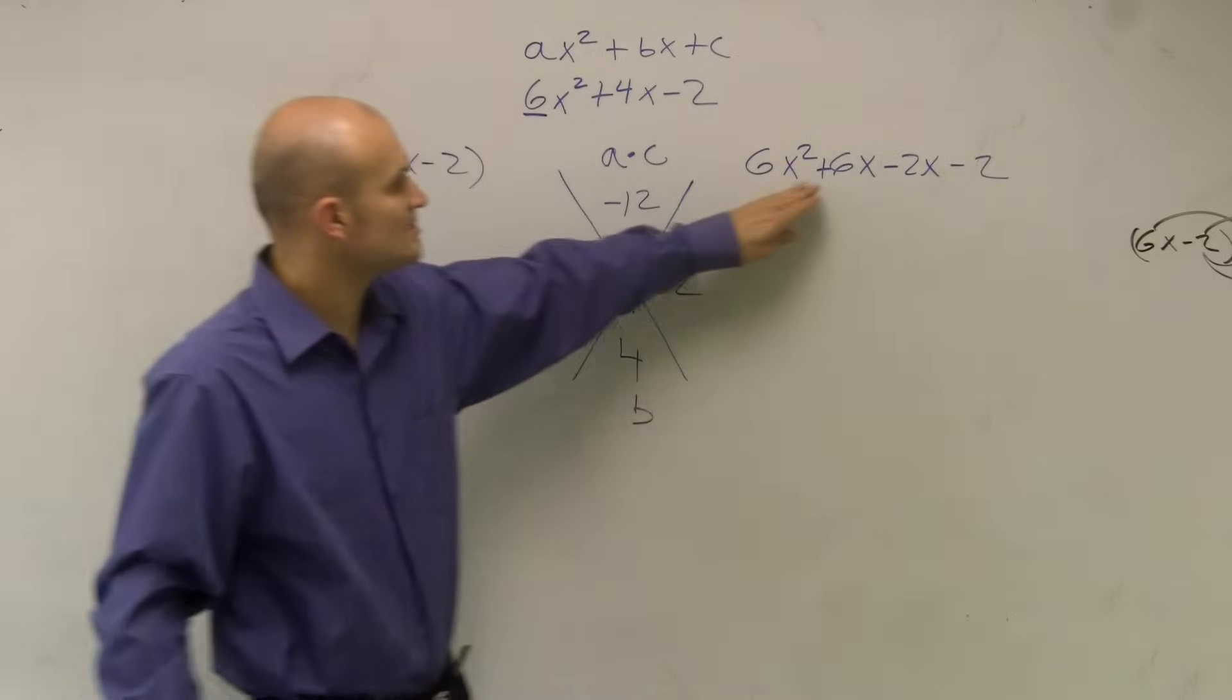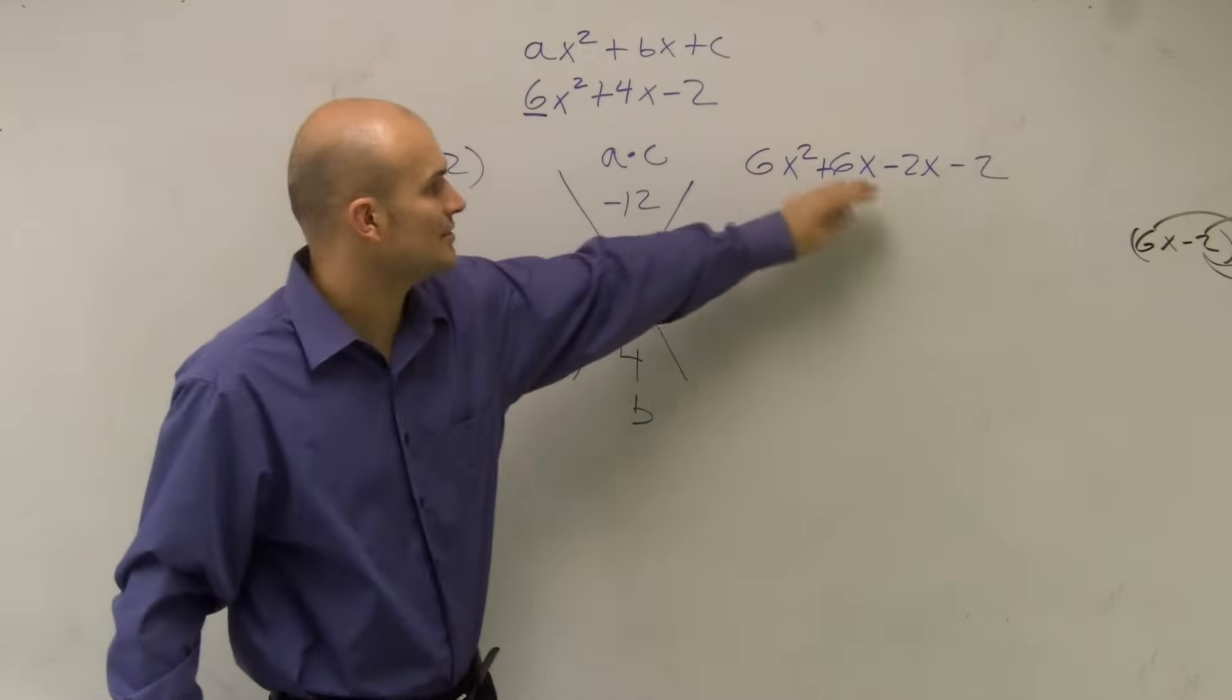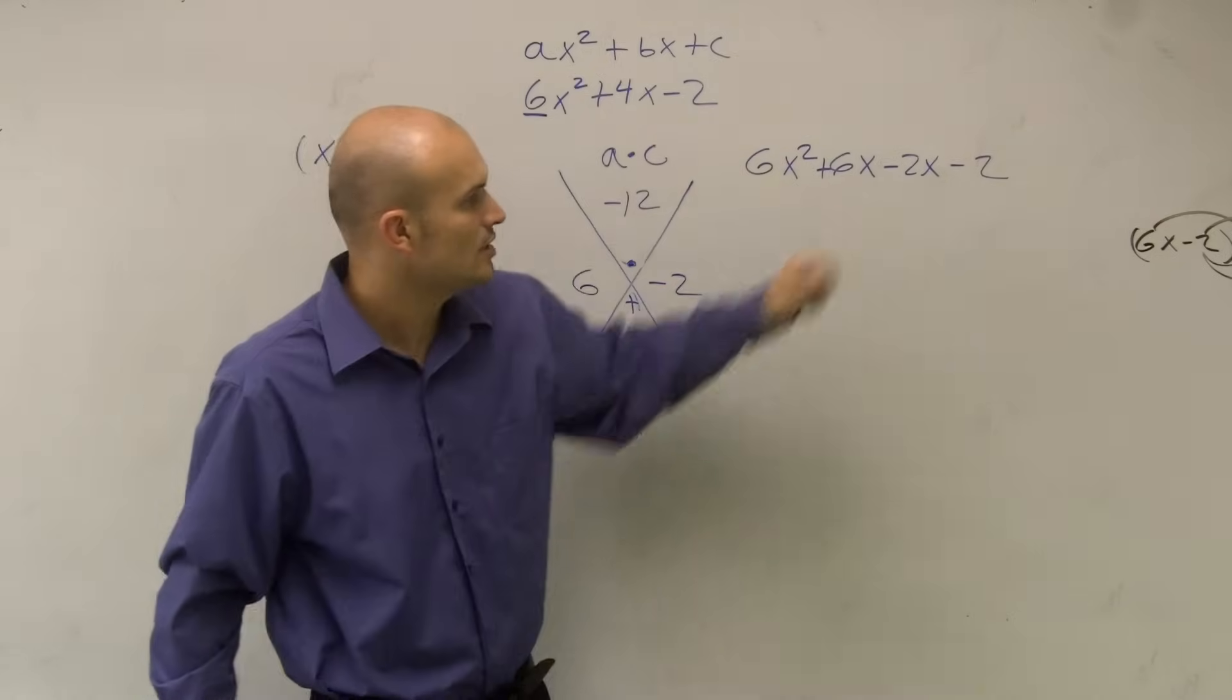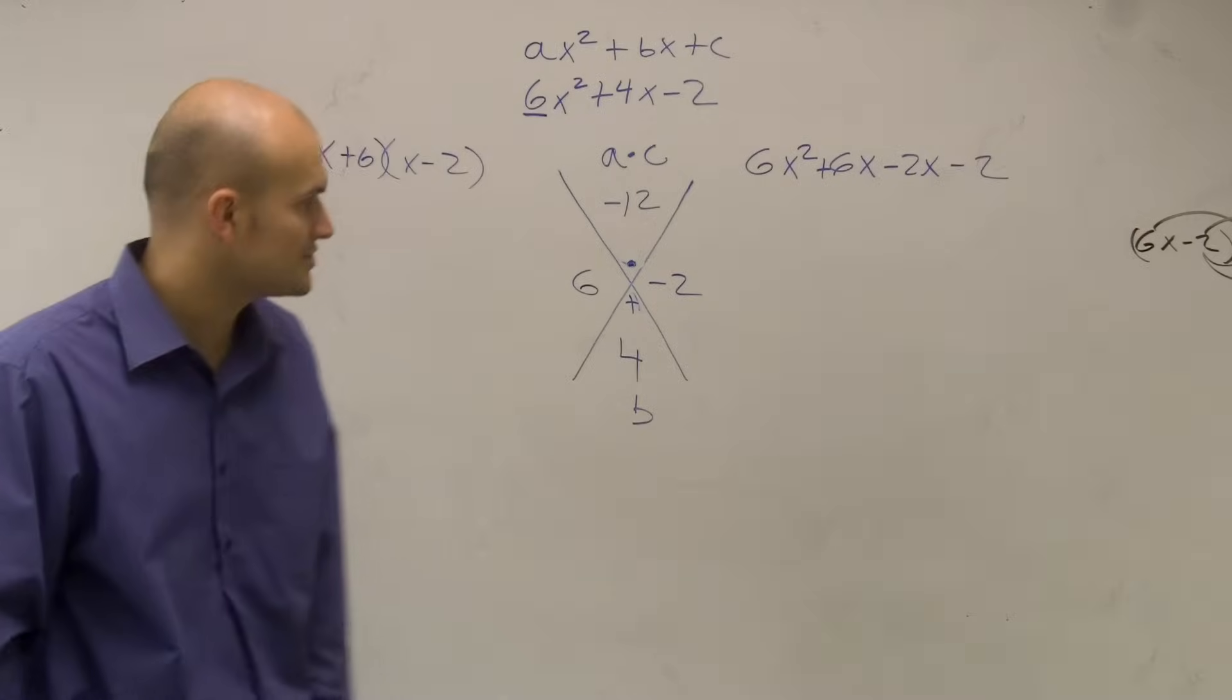So when I rewrite my middle terms, now this has the same value. All I did was replace a 4x with a 6x minus 2x minus 2.